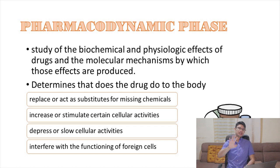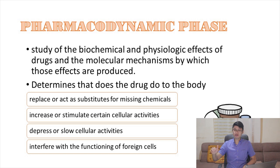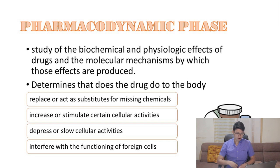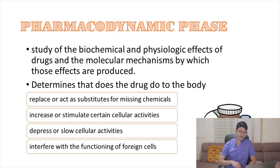There are four major ways a particular medication affects your body. Number one, it might replace or act as a substitute for a missing chemical or substance. Number two, it will stimulate, hasten, or catalyze a particular cellular activity to increase its activity. Next, there are some medications that slow or inhibit several cellular activities. And lastly, there are some medications that might interfere with processes occurring in different foreign cells or substances — such as your antibiotics, discussed in your microbiology classes.